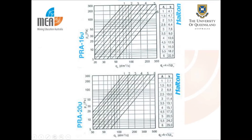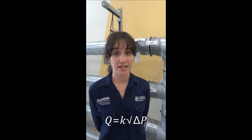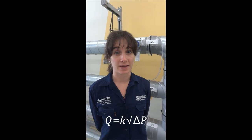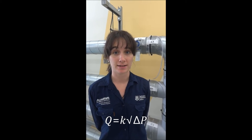The calibration coefficient for each regulator can be found from these tables — the top one for ducts A and B, and the bottom for duct C — using a given A value of 6. Recording the pressure change across the orifice plate and using the calibration coefficient k for each orifice plate, the quantity of each airway can be calculated from the equation displayed.